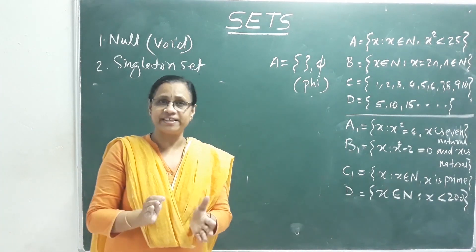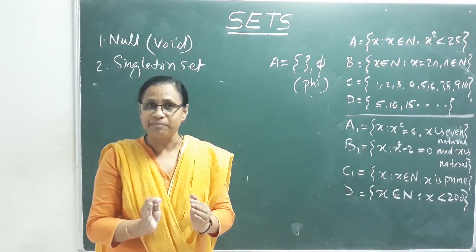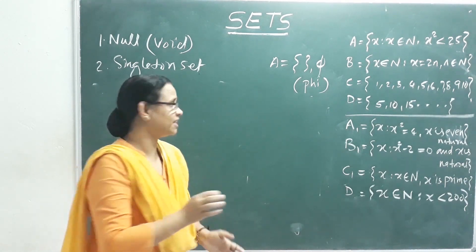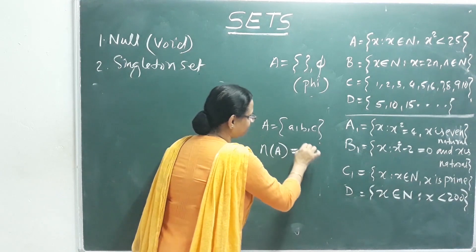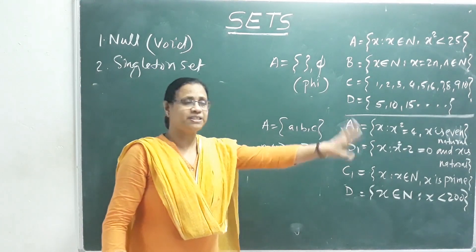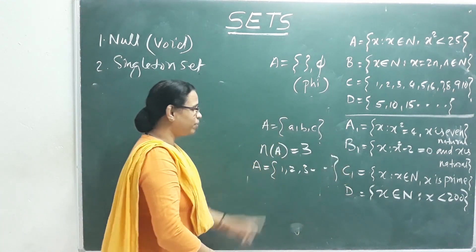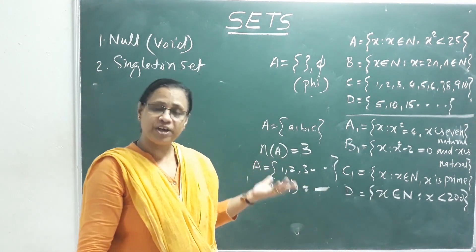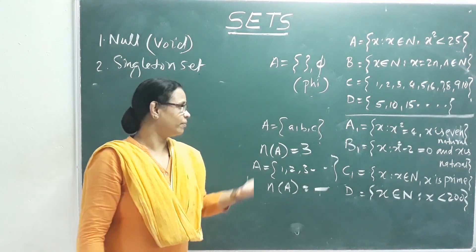A finite set has a countable number of elements. The count of elements in a set is called its cardinality. For example, if A = {a, b, c}, then the cardinality of A is 3, written n(A) = 3. An infinite set has elements that continue without end, such as natural numbers 1, 2, 3, etc.